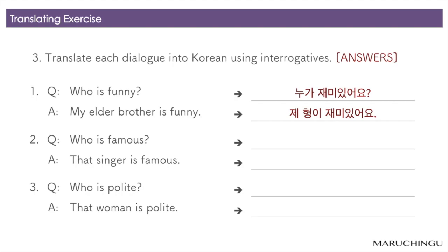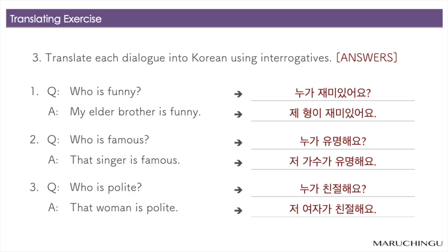1번. 누가 재미있어요? 제 형이 재미있어요. 2번. 누가 유명해요? 저 가수가 유명해요. 3번. 누가 친절해요? 저 여자가 친절해요.